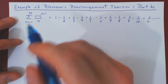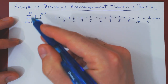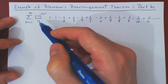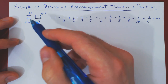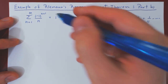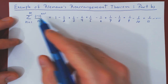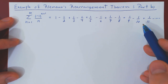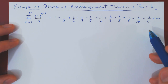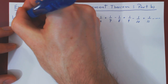This series converges conditionally. You can prove that it converges with the alternating series test. But if you put the terms in absolute value, then you're summing 1 over n from 1 to infinity — this is the harmonic series, or a p-series with p equals 1, which diverges. So this series does converge conditionally, and we know the exact value it converges to: it converges to exactly ln(2).